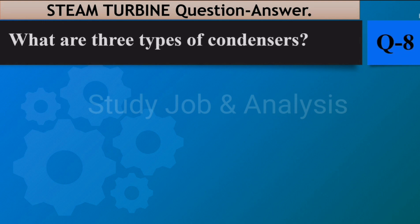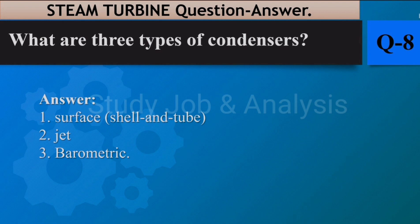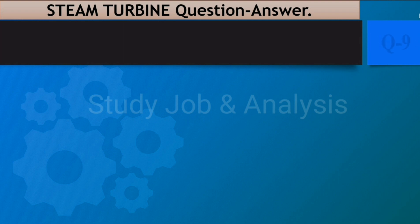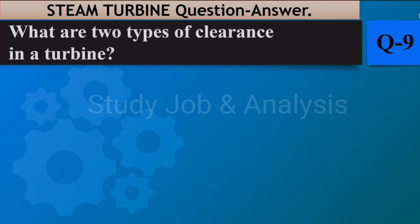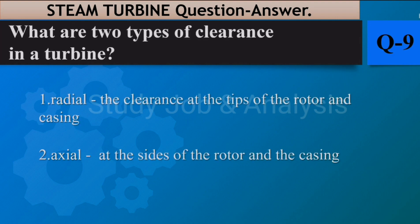Question number eight: What are three types of condensers? Answer: One, surface shell and tube; two, jet; three, barometric. Question number nine: What are two types of clearance in a turbine? Answer: One, radial — the clearance at the tips of the rotor and casing; two, axial — at the sides of the rotor and the casing.